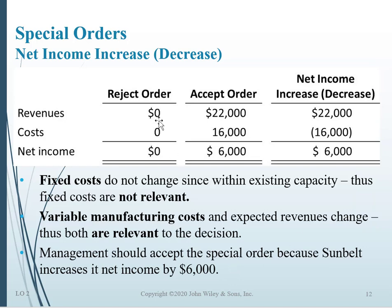If we reject the order, there are no revenues, no costs, and no impact on net income. But if we accept the order, revenues will increase by $22,000 and costs will go up by $16,000. Looking at net income increase or decrease: increasing revenue is a positive number, increasing costs is a negative number. So $22,000 plus negative $16,000 means net income increases by $6,000 if we move forward with this project.